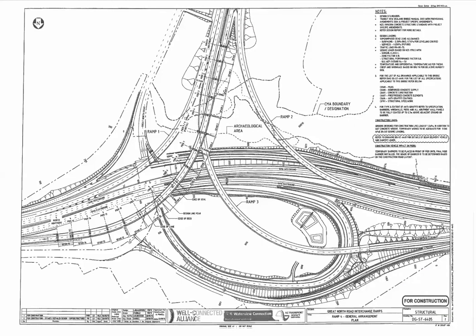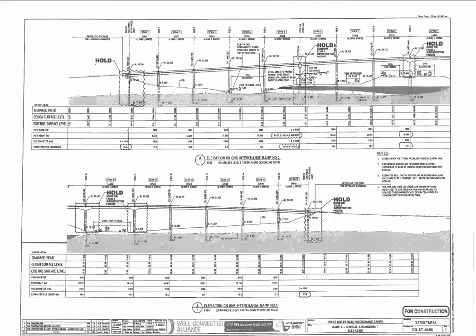Going on to the next one. This is the plan of the whole thing. You can see that there are three ramps — ramp 1, ramp 4 which is what these plans are for, ramp 3 and ramp 2. This is a cross section of ramp 4. Not too much use for you, but it's included so you can see the whole thing in cross section.